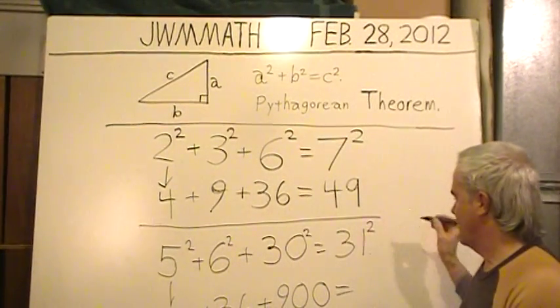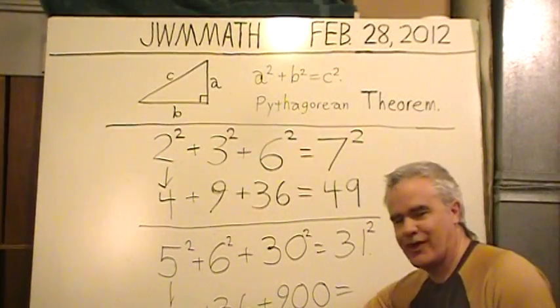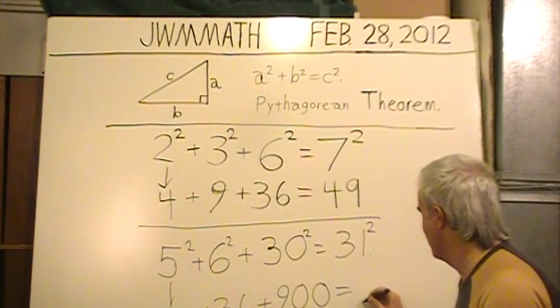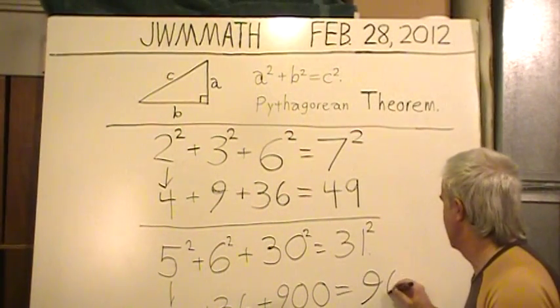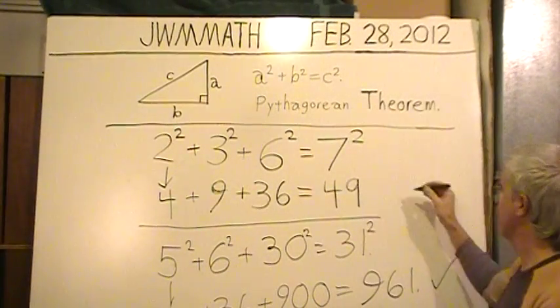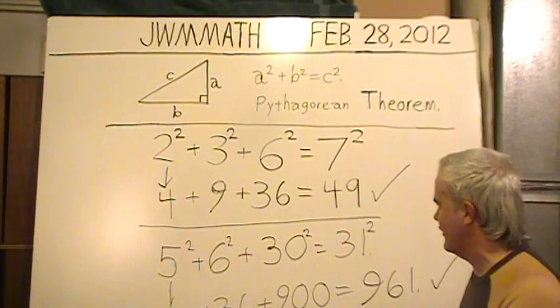And then 31 squared. Do it on the calculator or just add these numbers up. The result will be the same: 961. And that checks out, just like this one had checked out.